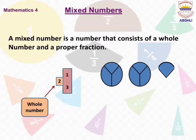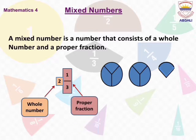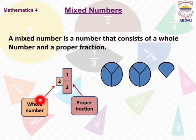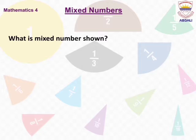We write 1 by 3 as the proper fraction. The last circle has only one part colored and 2 parts are uncolored, so we write 3 in the denominator. So a mixed number consists of whole number 2 and proper fraction 1/3. Now students, let's learn more about what mixed numbers look like.